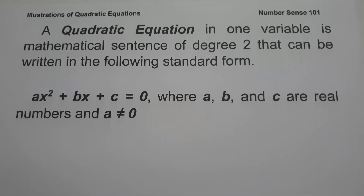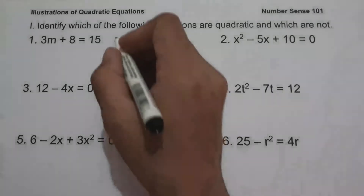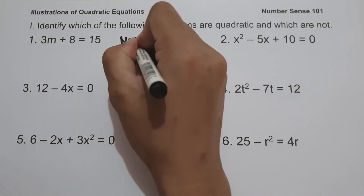Always remember, before you identify the value of a, b, and c, you must write the given equation in standard form. So let's start with examples. On the first set of examples, we are going to identify which of the following equations are quadratic and which are not. On number one, we have 3m plus 8 equals 15. Since the highest exponent is one, this is not a quadratic equation.